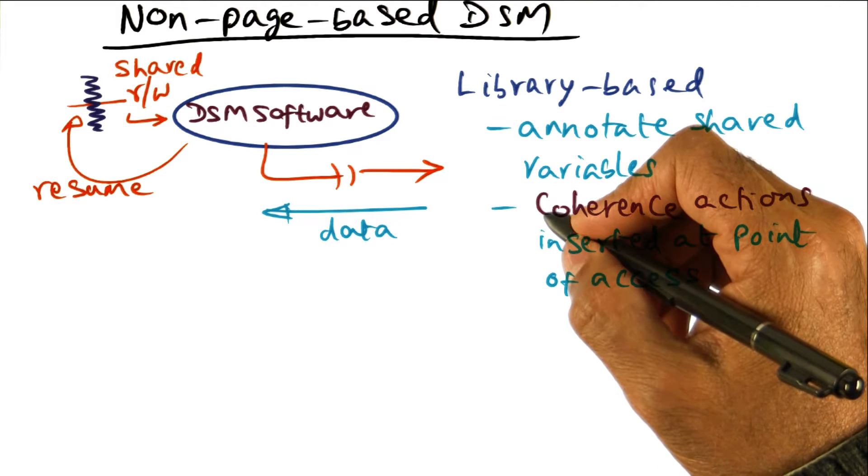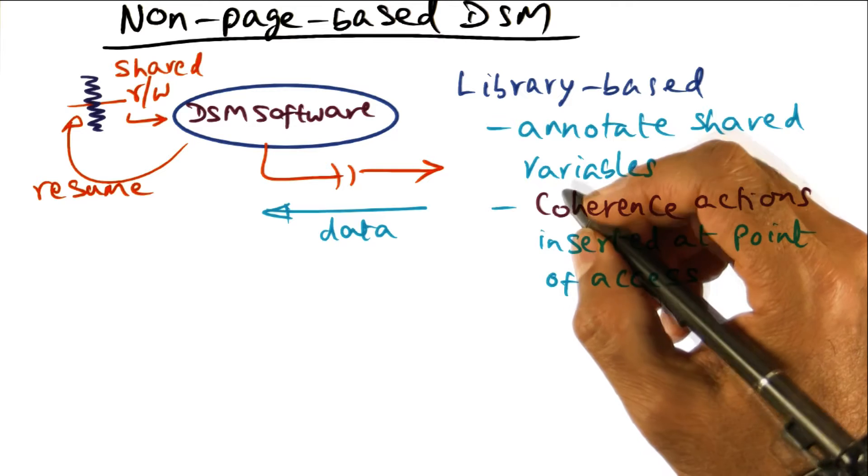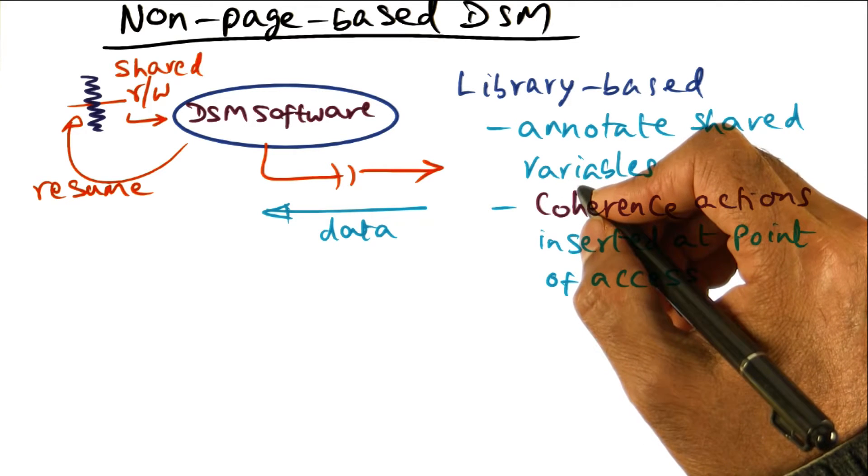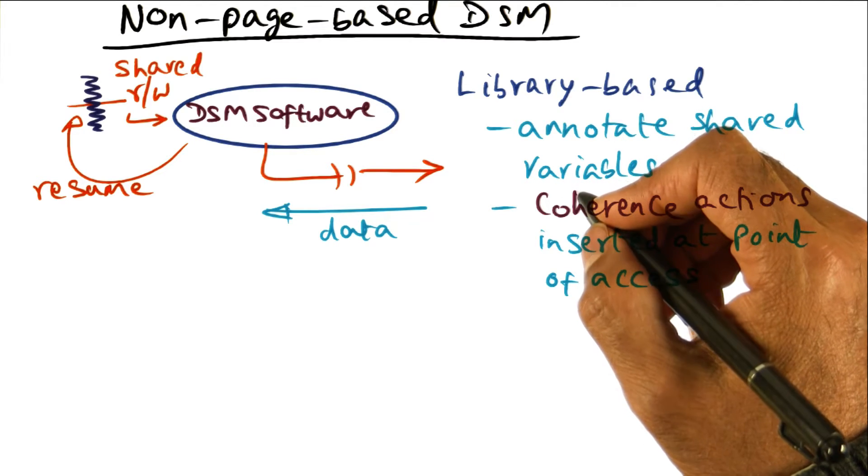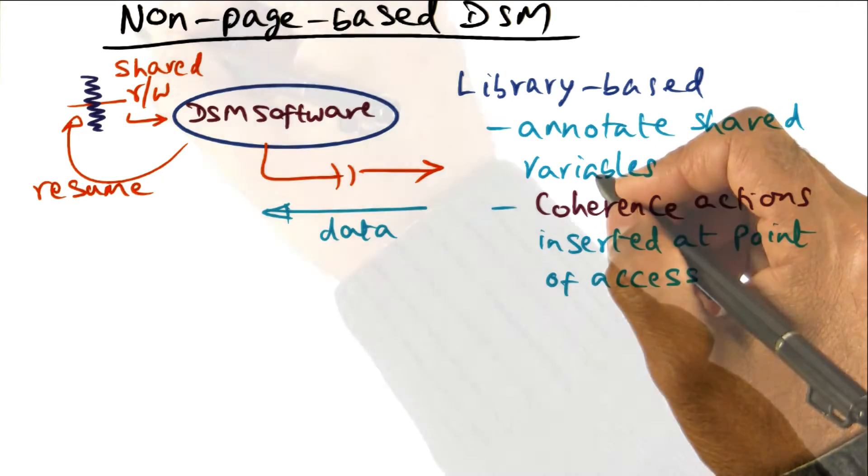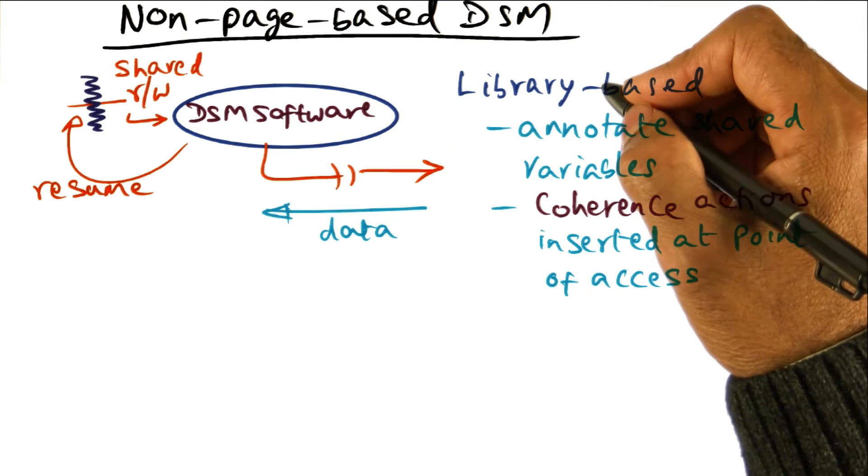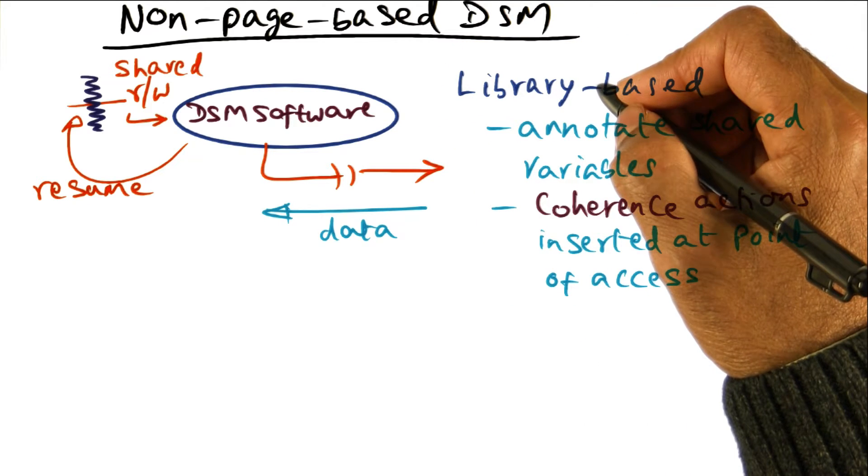In this lesson, I've covered distributed shared memory, and particularly I've given you a specific example of a distributed shared memory system called Treadmarks that uses lazy release consistency and multiple writer coherence. I just want to leave you with some thoughts about non-page based DSM systems before concluding this lesson.